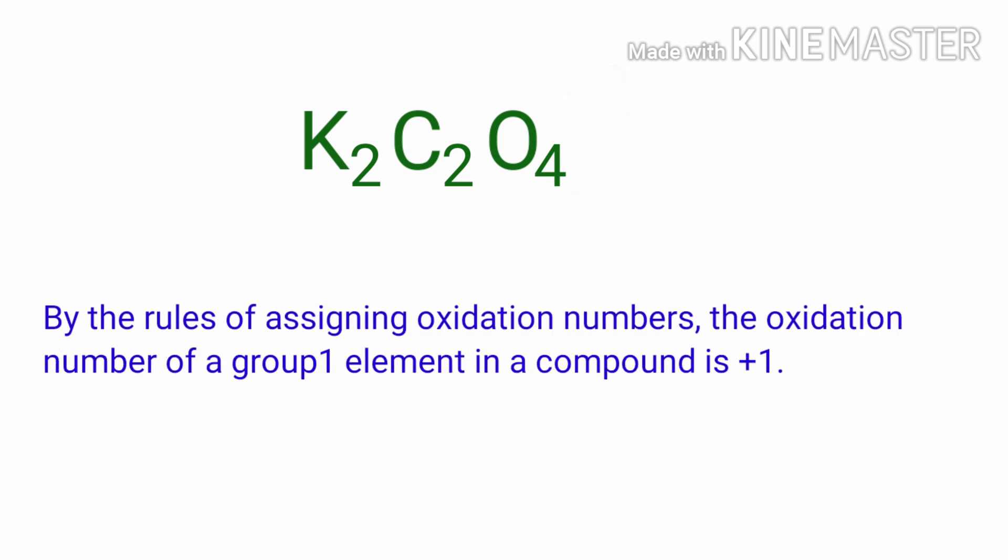By the rules of assigning oxidation numbers, the oxidation number of a group 1 element in a compound is plus one. Potassium is a group 1 element, so the oxidation number of potassium is plus one.